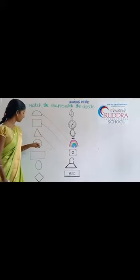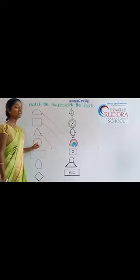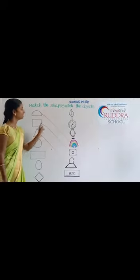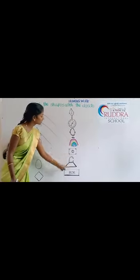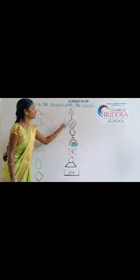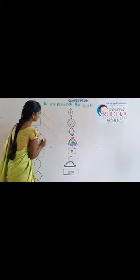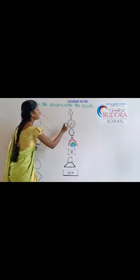Next, what shape is this? This is a circle. Which picture is similar to the circle? Clock. I will draw a line from circle to clock.